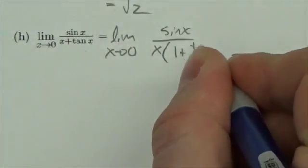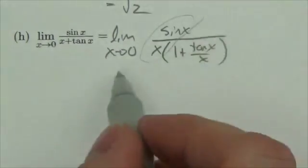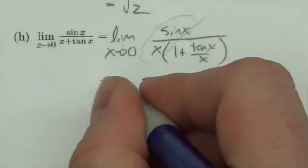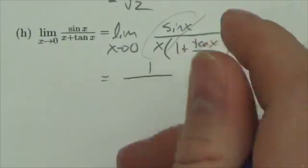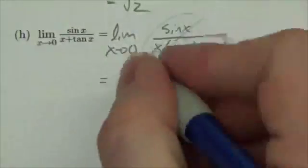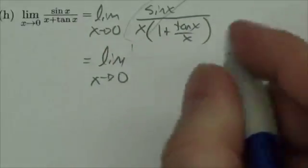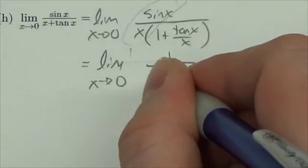Now the sine of x over x as x goes to 0 is 1, and so this leaves me with 1. I've been good about this the whole time and I just completely forgot - you gotta write the limit as x approaches 0. Okay, of 1 over 1 plus the tangent of x over x.